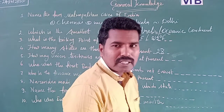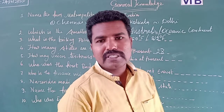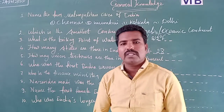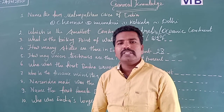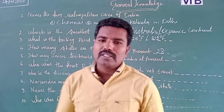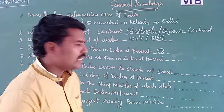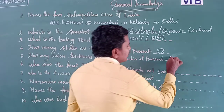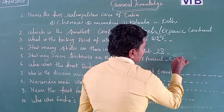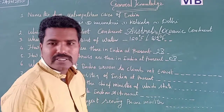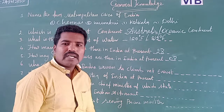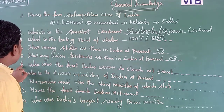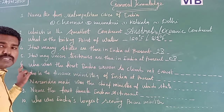And how many union territories are there in India at present? All the union territories are controlled, maintained, and administered by the central government of India directly. We have 8 union territories presently in India.